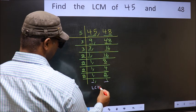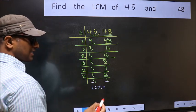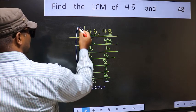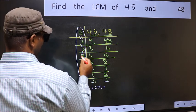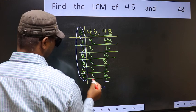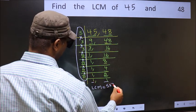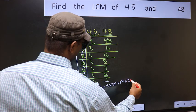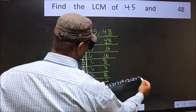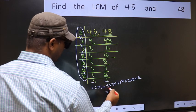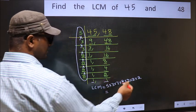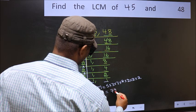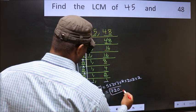So our LCM is the product of these numbers. That is 5 into 3 into 3 into 2 into 2 into 2 into 2. When we multiply these numbers, we get 720 as our LCM.